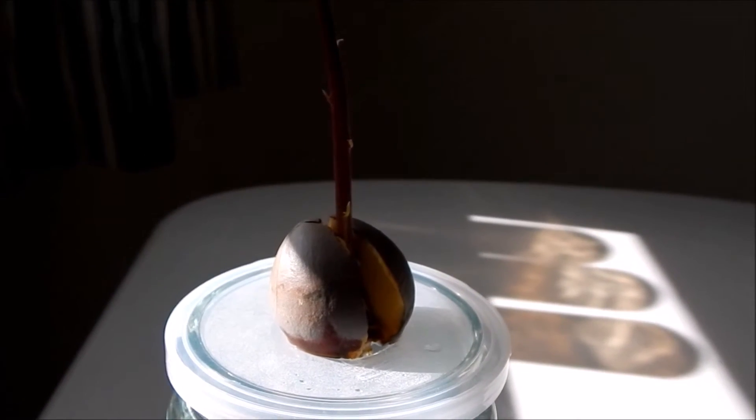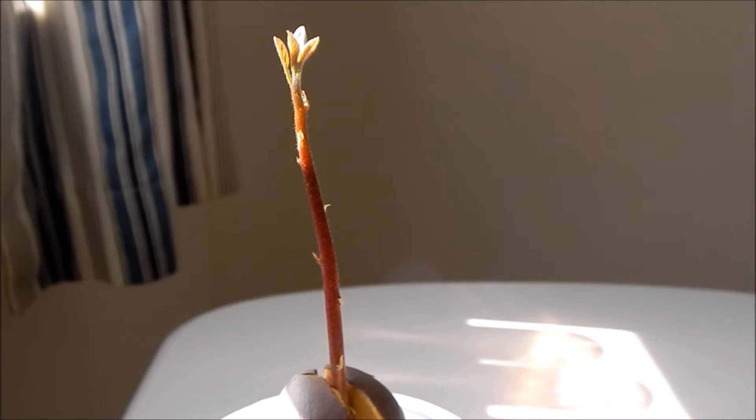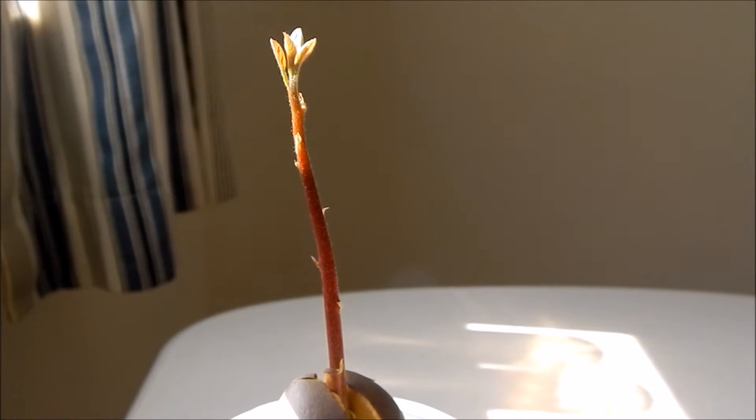Day 31 shows that the avocado seedling with four leaves, cotyledon and stem, were all in red color.